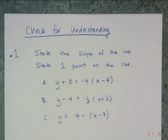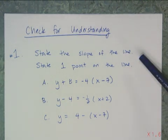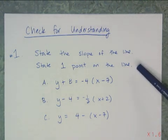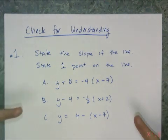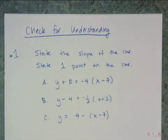So let's check to see if you understand what point-slope gives you. So first off, I want you to state the slope of the line and state one point on the line. And I want the point that the equation gives you for these three equations in point-slope form.